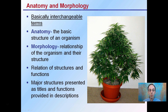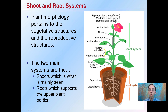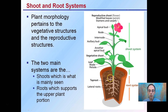Major structures are presented as titles and the functions are provided in the descriptions. Starting with the shoot and root systems, plant morphology pertains to the vegetative structures and the reproductive structures. There are two main systems: the shoot, which is the upper system, is what we mainly see or associate with the plant — that includes the nodes, internodes, buds, and leaves — and we have the root system down here which supports the upper growing portion.